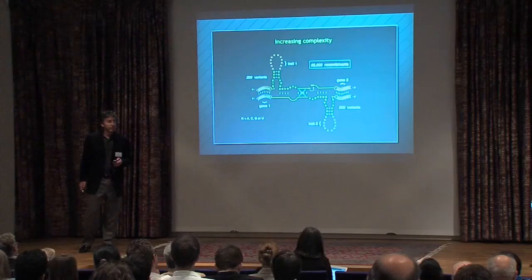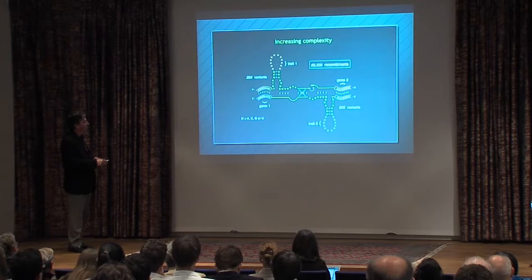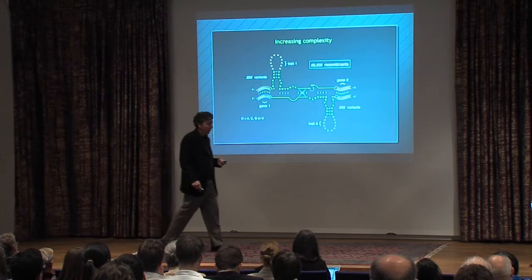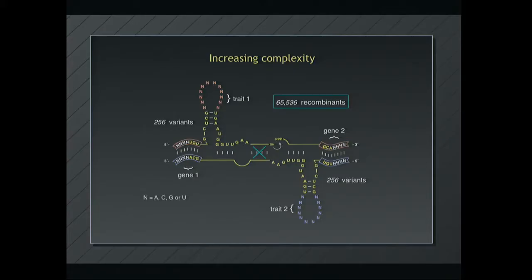But now we've got to make those molecules. How do you make the library of components where you have a gene in 256 different flavors encoding a trait in 256 corresponding flavors? We need a genetic code is what we need. Now we're not translating the RNA sequence into something else. The code relates the sequence in the gene region to the sequence in the trait region. So what code should we use?